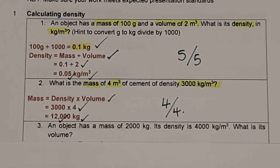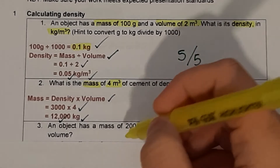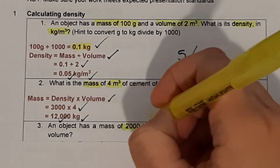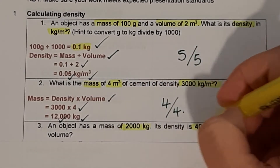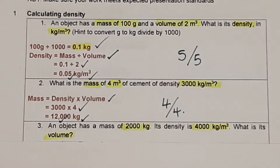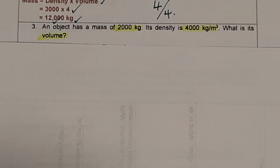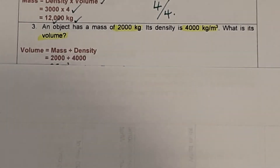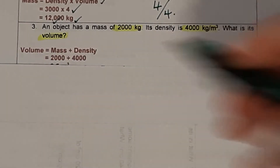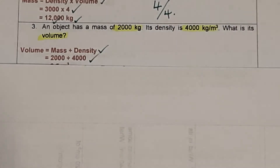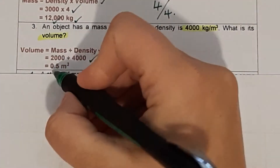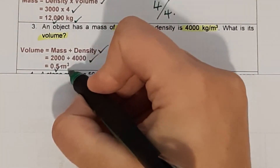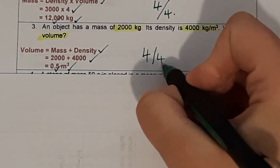Question 3: an object has a mass of 2,000 kilograms and a density of 4,000 kilograms per metres cubed. What is the volume? Volume equals mass divided by density: 2,000 divided by 4,000 equals 0.5 metres cubed. Give yourself a mark out of 4.